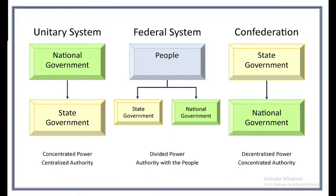Now here we can see a chart showing the three types of government. First, in a unitary system, the national government sits at the top and powers are delegated from the top to the states. In other words, the states and the local authorities exercise only those powers which are delegated by the central government. In short, there is centralized authority or concentration of power at the center. One good example of a unitary system is the UK.